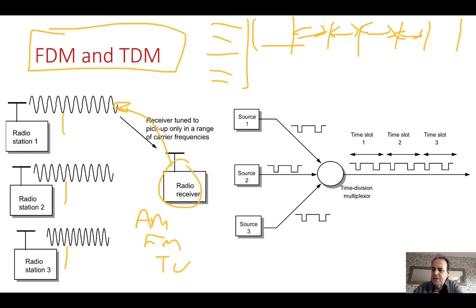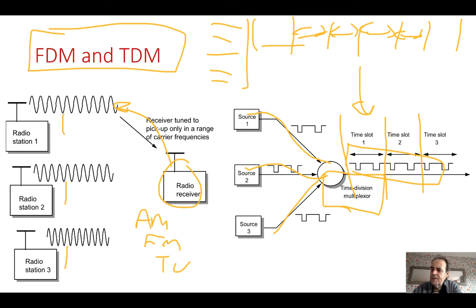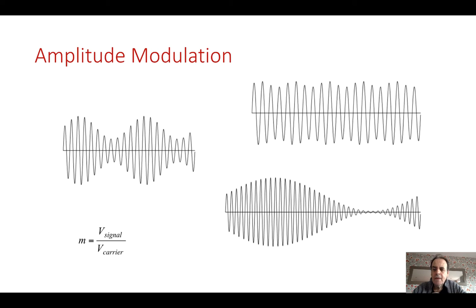Another method is time division multiplexing. With time division multiplexing, we allow each of the communicating parties a certain time period to transmit data. We take all our sources, multiplex them together into a single bit stream, and then at the other end we de-multiplex.